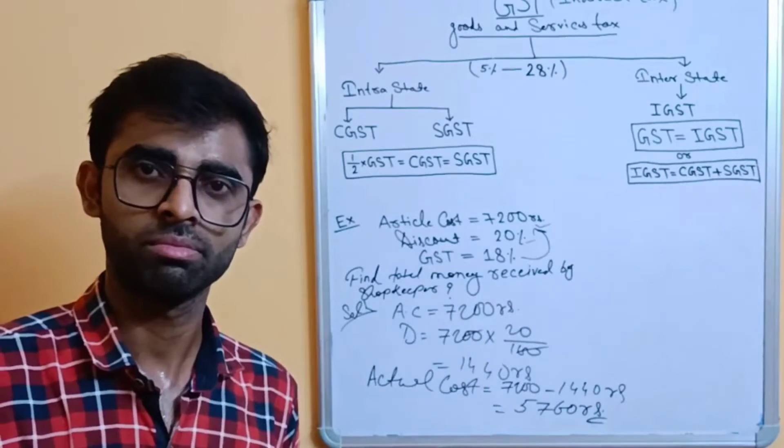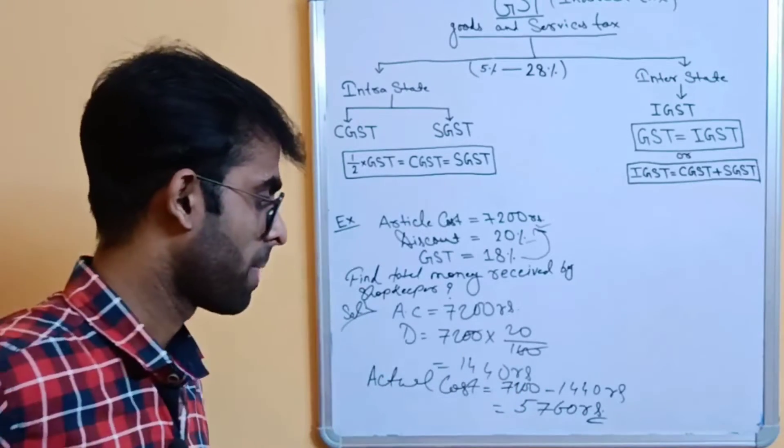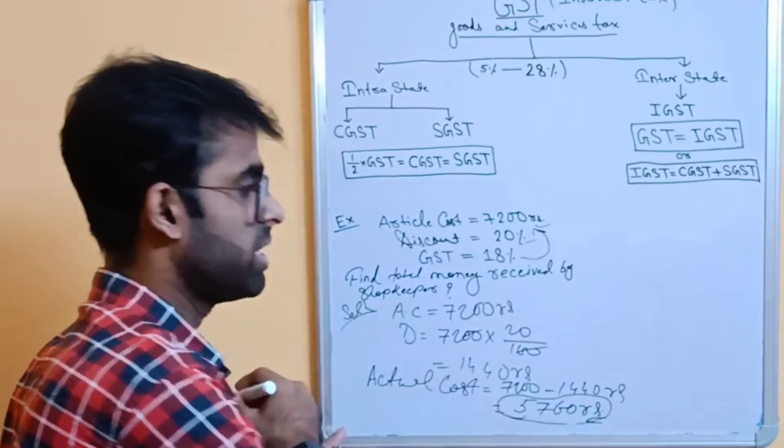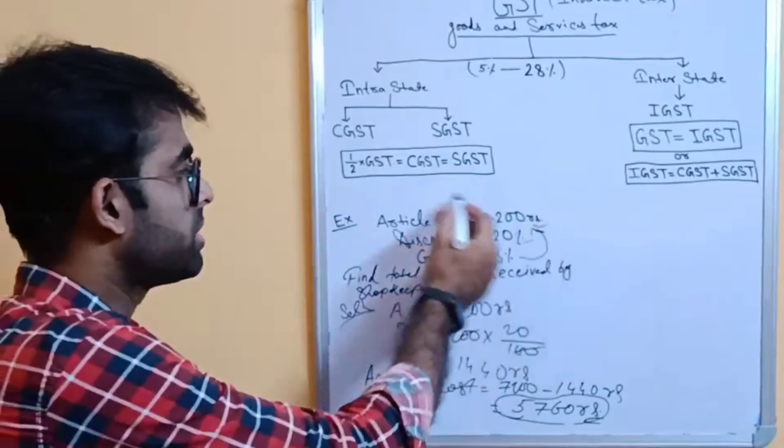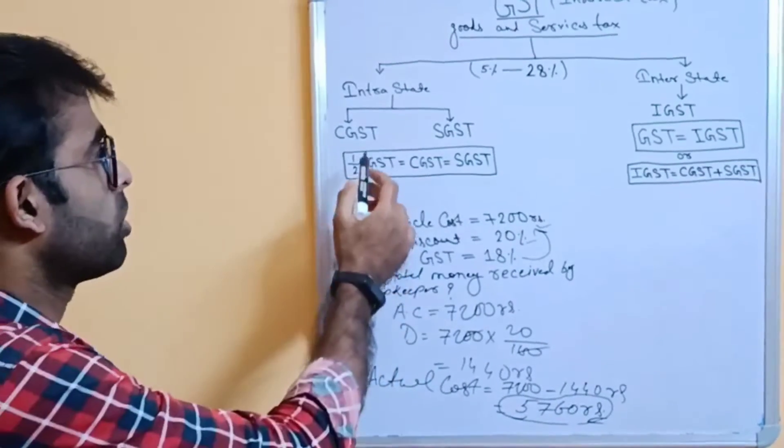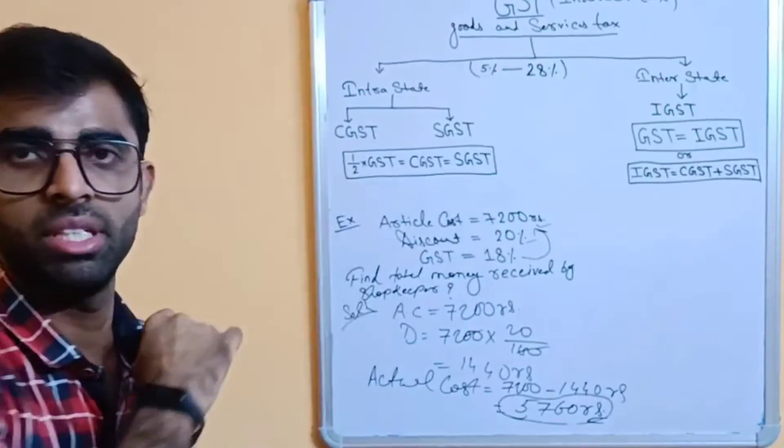So, is this the amount we have to pay to the shopkeeper? Yes or no? If you say yes, then it's wrong. For this amount, we have to pay 18% GST. And all these things are happening within a state. So, we have to focus on only this type of GST: CGST and SGST.